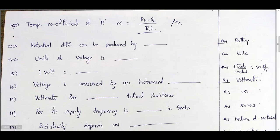The voltage is measured by an instrument called voltmeter. An important bit: voltmeter has infinite internal resistance.